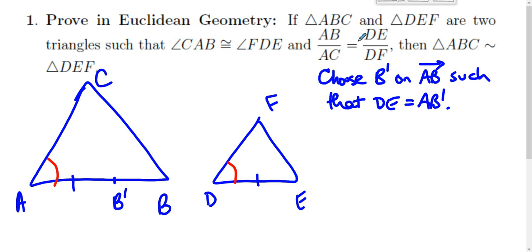Call L intersect AC the point C prime. Now we're in Euclidean geometry.